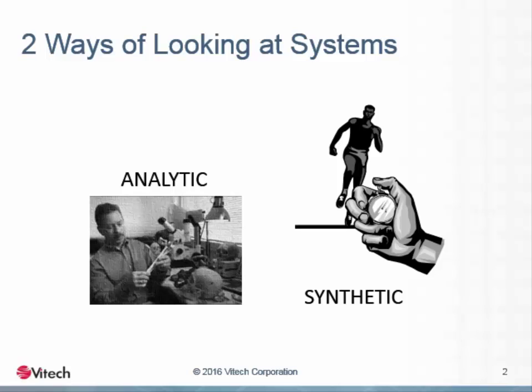There are two different ways of thinking about systems. Both are important and useful in the proper context. The first is known as analytic thinking. A theme of the Western Enlightenment, this way of thinking is well understood as an approach to problem solving. It is taught as the primary way of thinking about problems in our educational system.